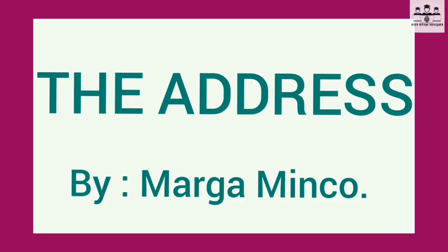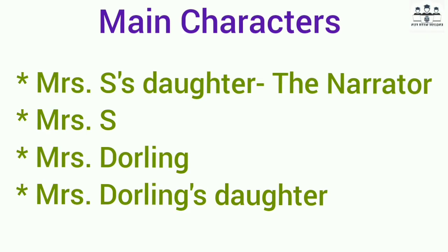Let's discuss the characters of the story first. The first character is the narrator. The narrator's name is not mentioned anywhere in the story. She is called either the narrator or Mrs. S's daughter. She introduces herself as Mrs. S's daughter when she first visits Mrs. Darling's home — that is her only identification given in the entire story.